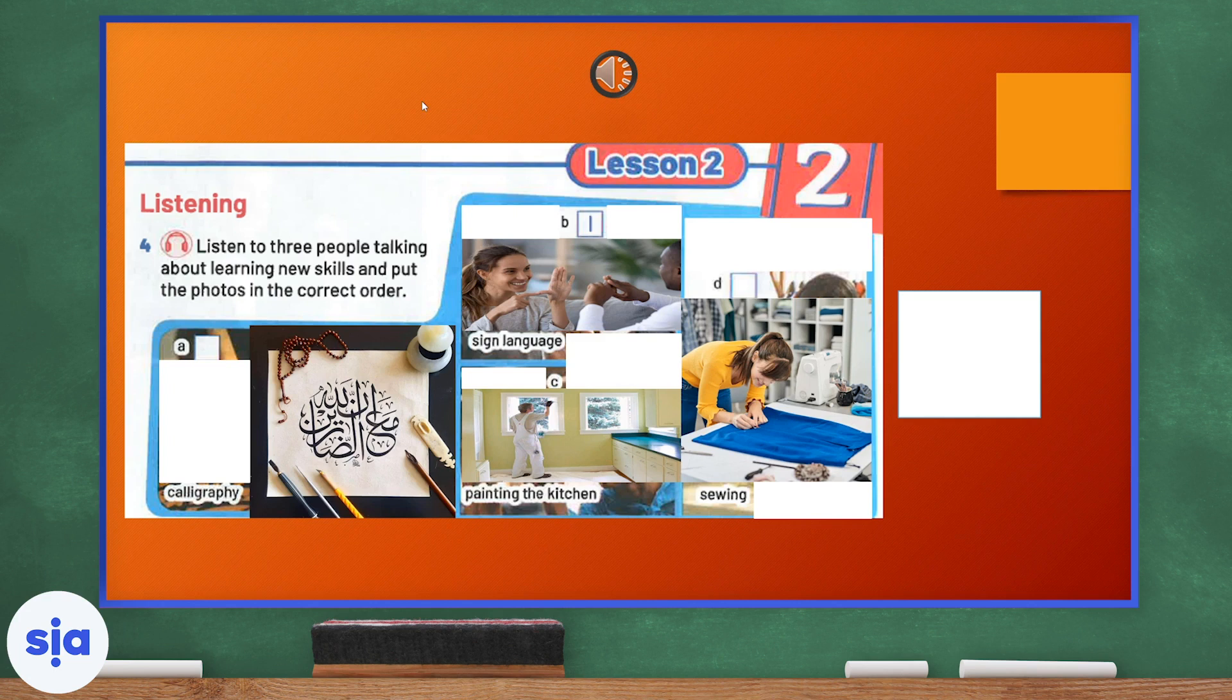Now, let's match the people talking to the skills. Number one, B. Number two, C, which is painting the kitchen. Number three, D and number four, A.